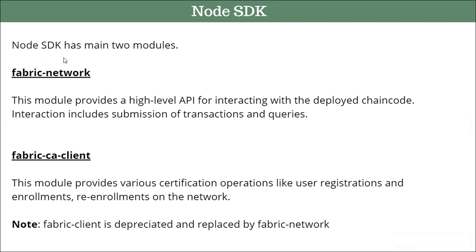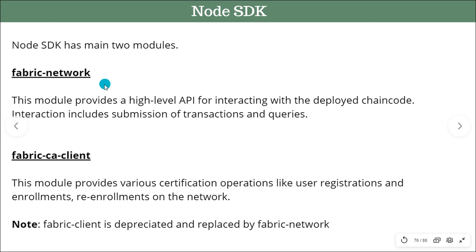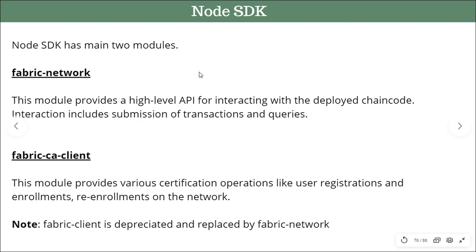When we talk about the Node SDK, this SDK brings us two main modules which you have to import whenever you use this SDK before you go and access your chaincode functionality from outside. The very first one is fabric-network. This module helps you to access your chaincode at a high level, providing high-level APIs.